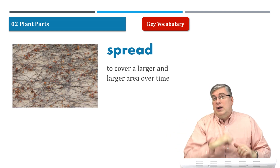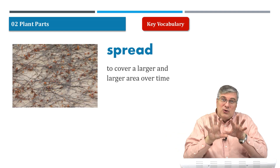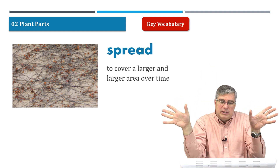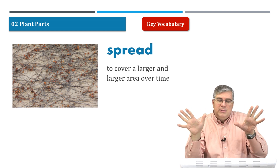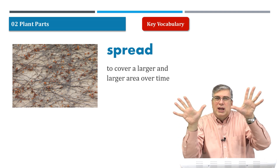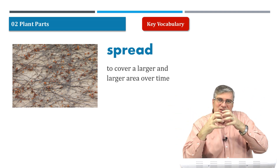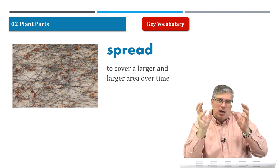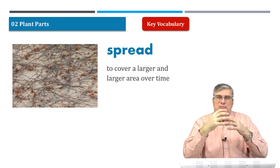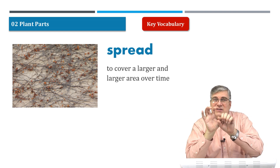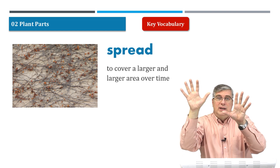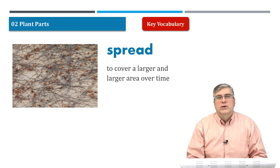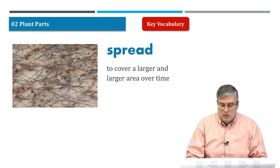Spread. As I talked about with vines, they grow up and around — they don't just grow up the building, they grow along the sides too. To spread means to cover a larger and larger area over time. They spread out. Spread or spread out is a common phrase. Vines spread over the building, covering a larger and larger area over time.